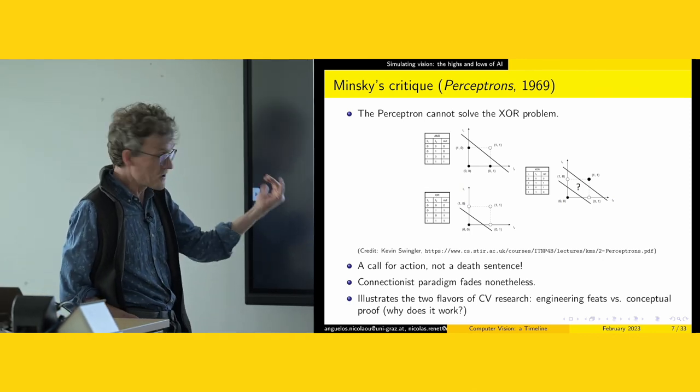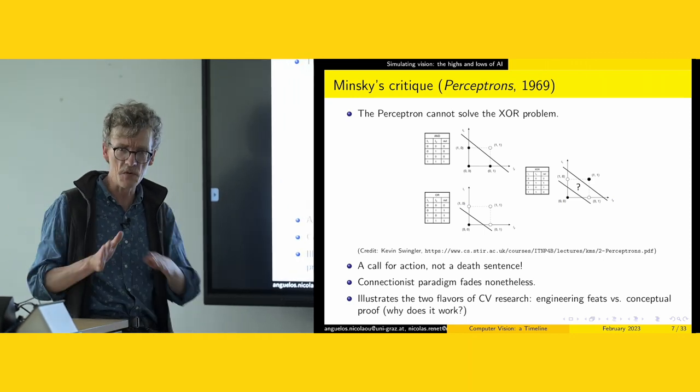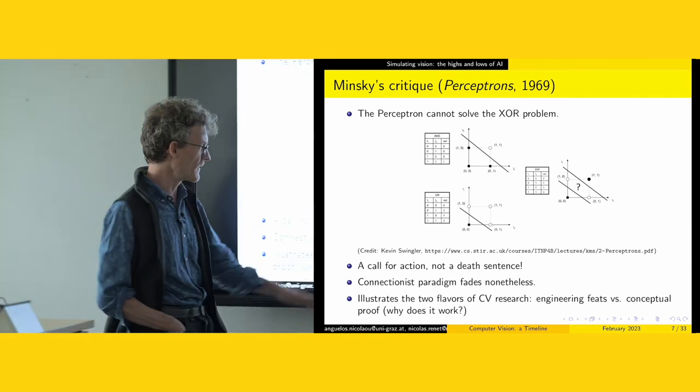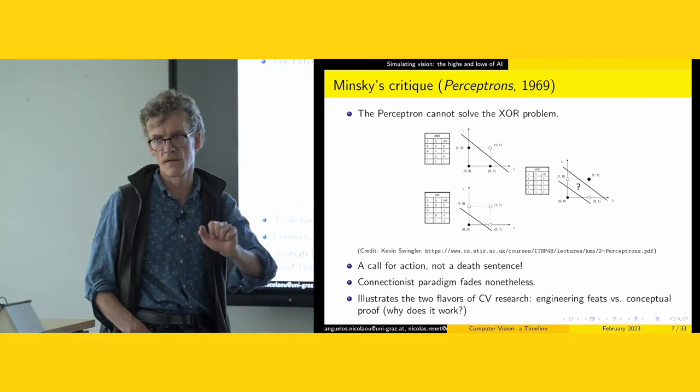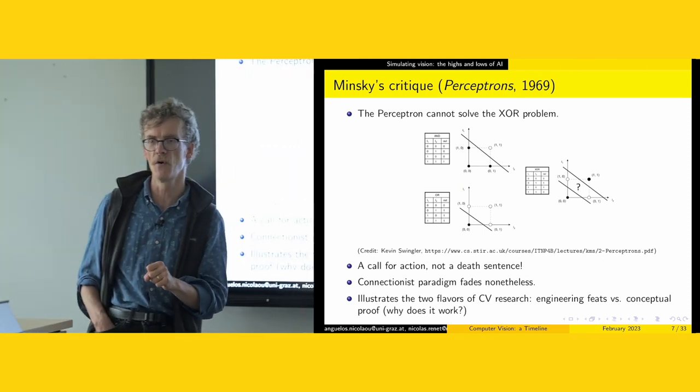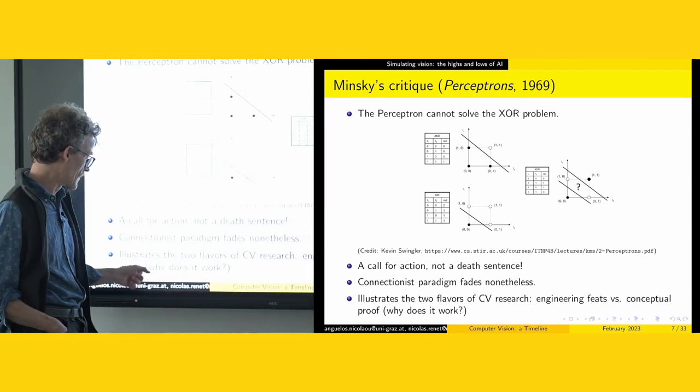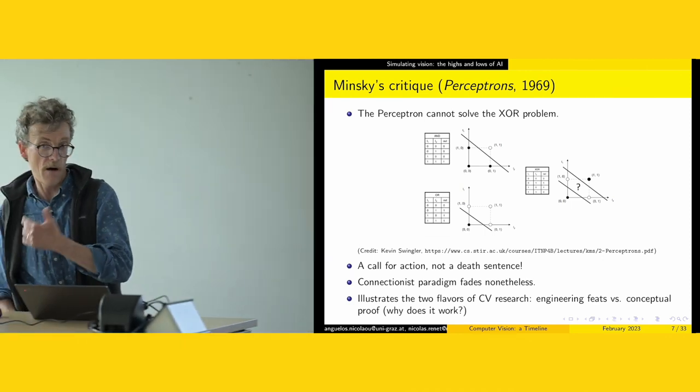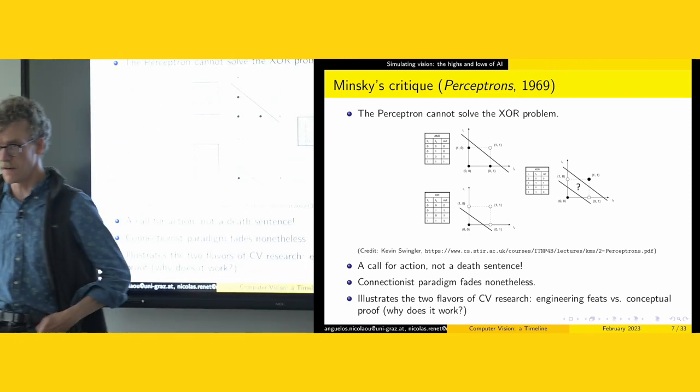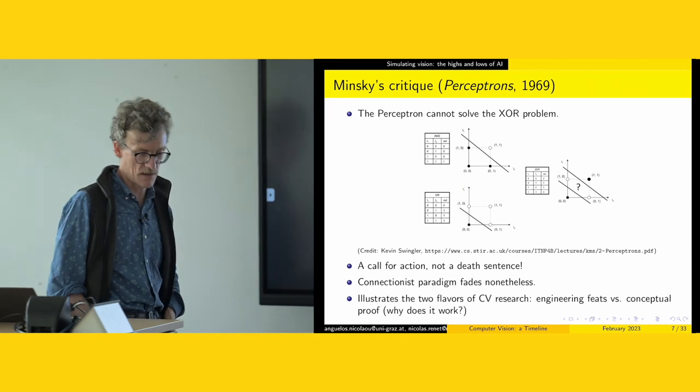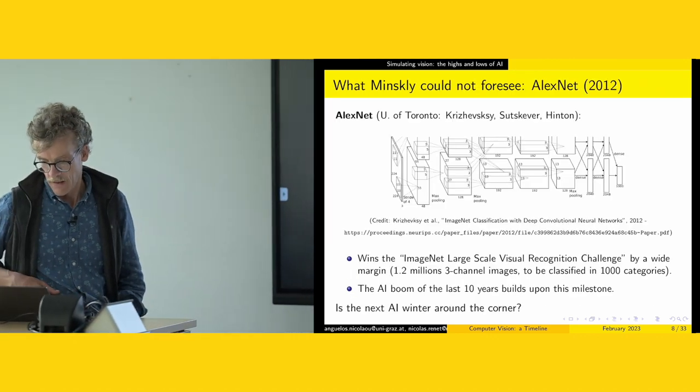Computer vision research has two aspects. There is the side of engineering feats where we build things that work. And there is the side of conceptual proofs where we show why they work. Sometimes we've got good theoretical ideas that are hard to support in real life, and sometimes engineering feats produce interesting results but we are having a hard time explaining why those results are useful.